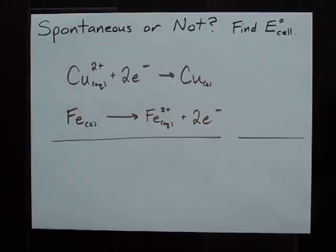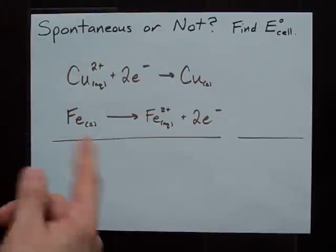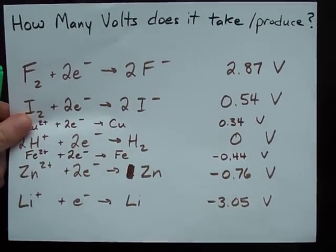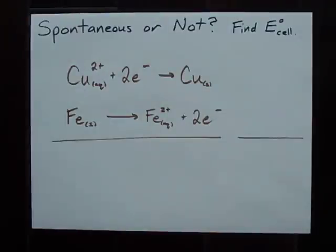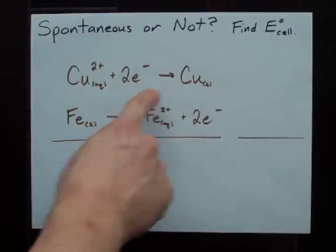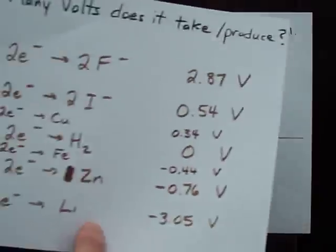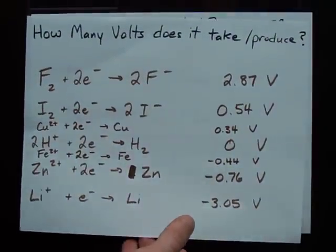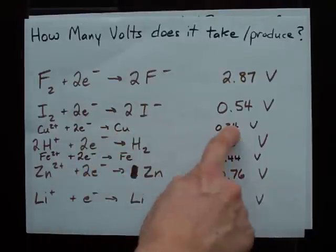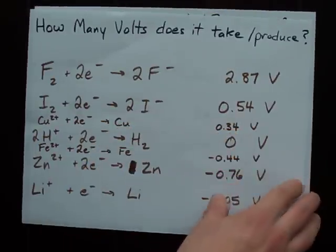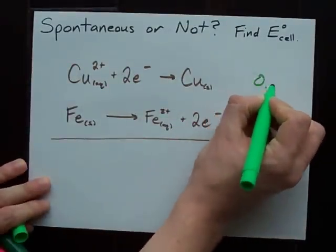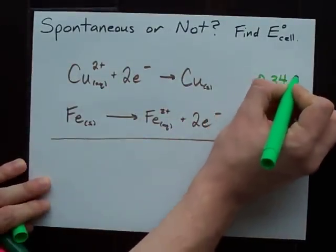To figure out whether or not this reaction happens as I've written here, I have to look up each reaction in a table of reduction potentials. Copper 2+ plus 2 electrons makes solid copper. In my table of reduction potentials, I find that gives off 0.34 volts of potential.